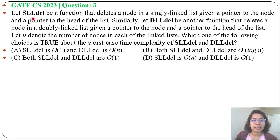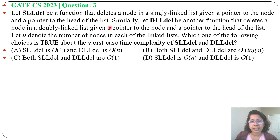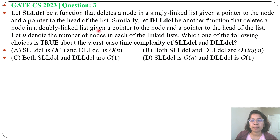Let slldel — that is, single linked list deletion — be a function that deletes a node in a single linked list given a pointer to the node and a pointer to the head of the list. Similarly, dlldel — that is, doubly linked list deletion — be another function that deletes a node in a doubly linked list given a pointer to the node and a pointer to the head of the list.